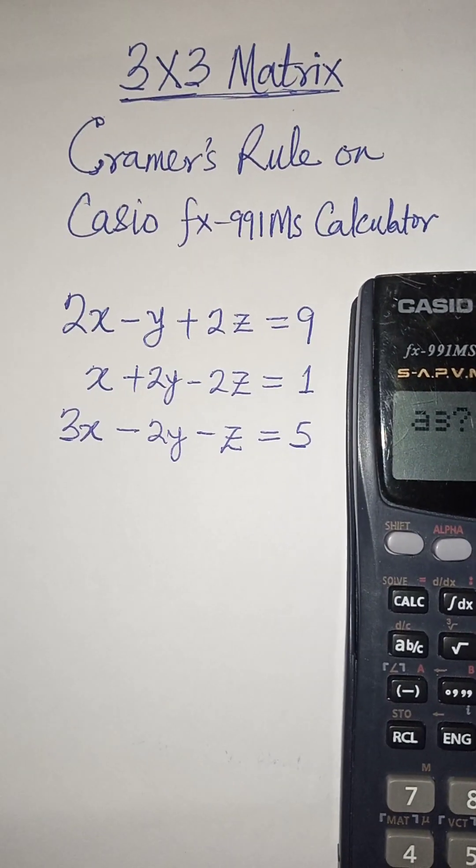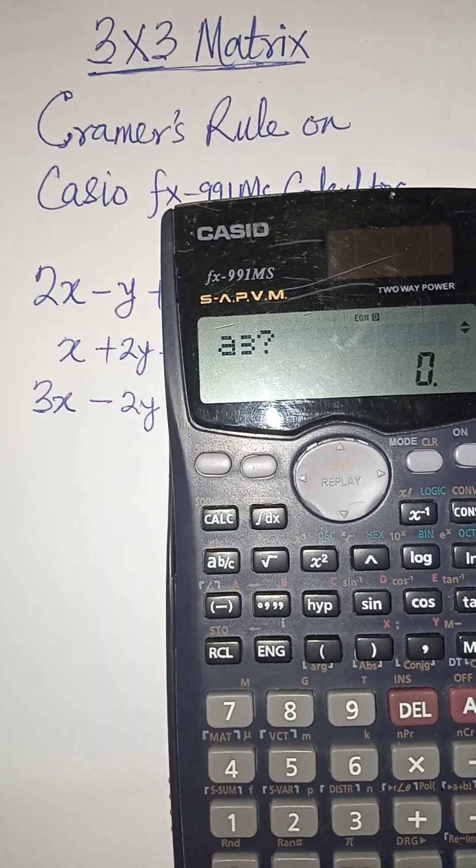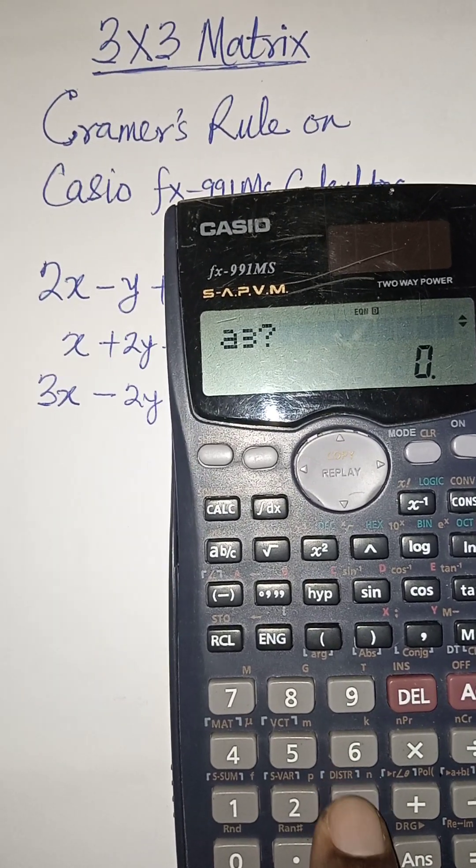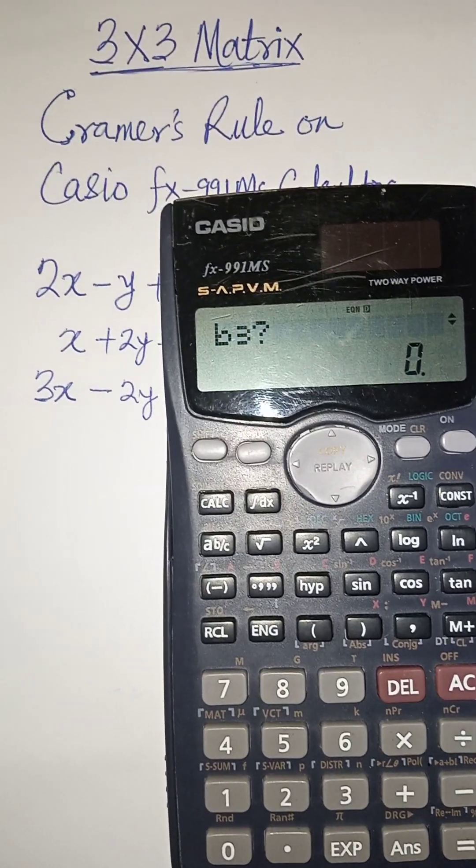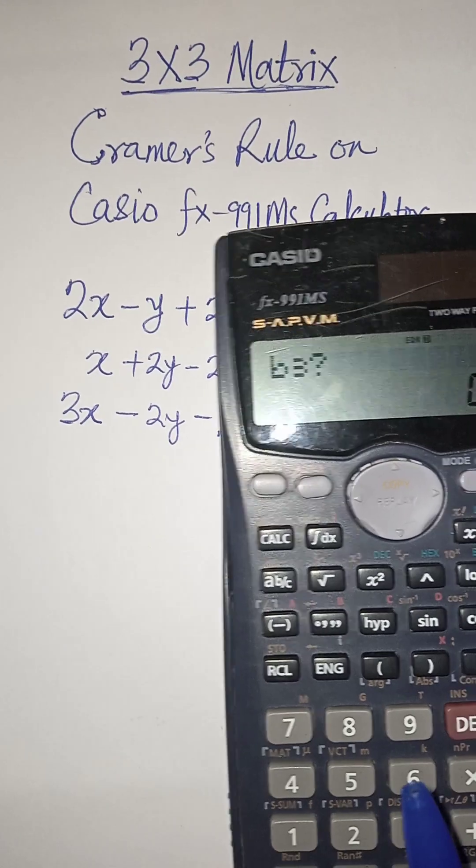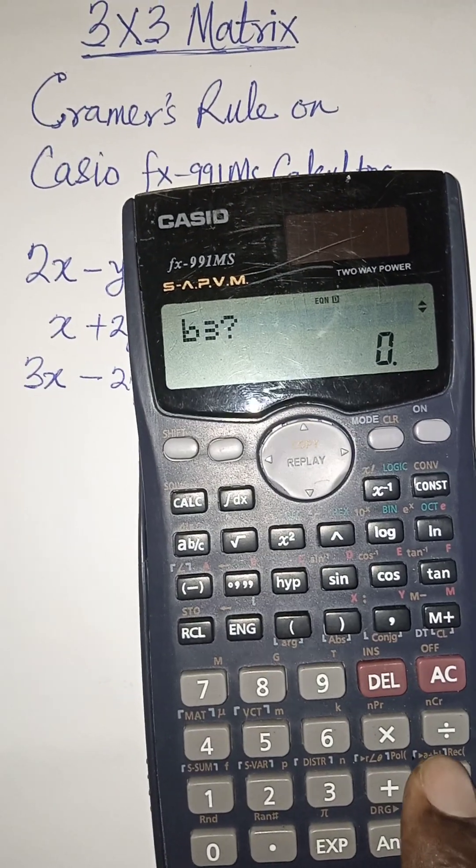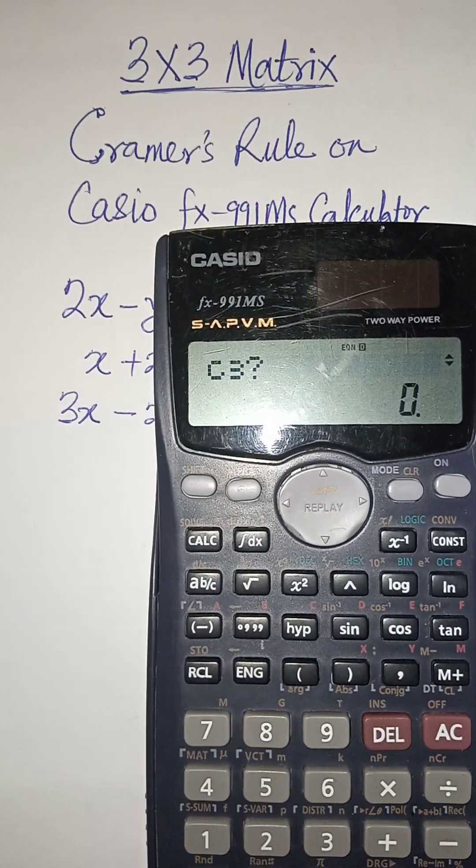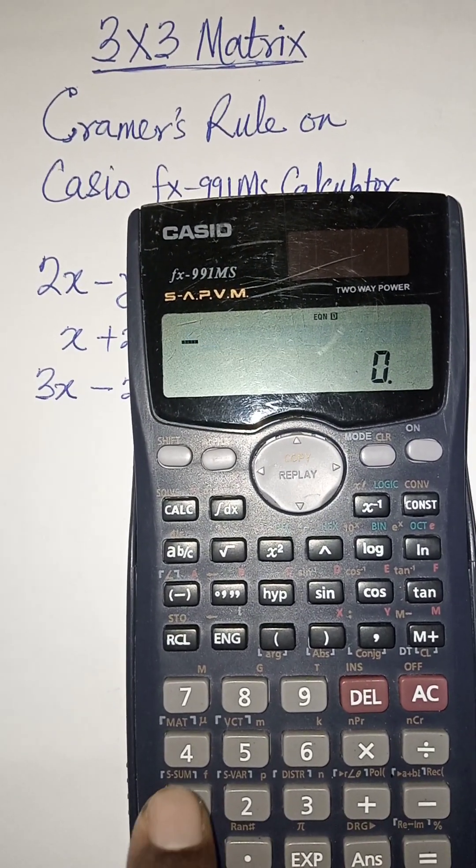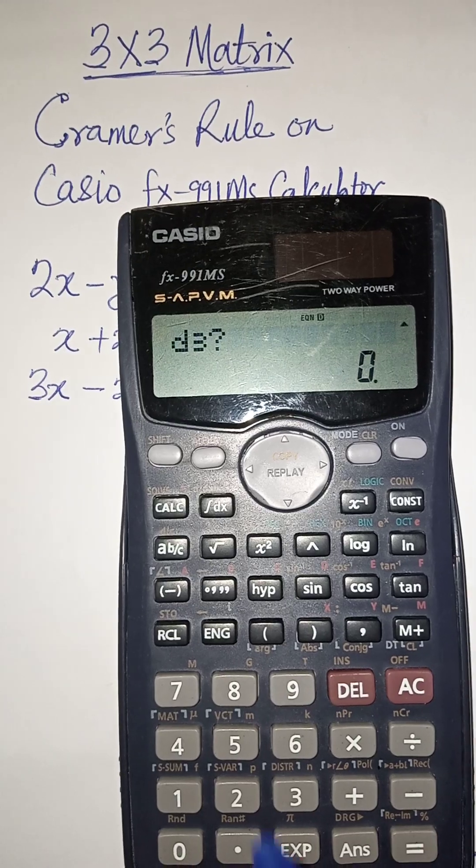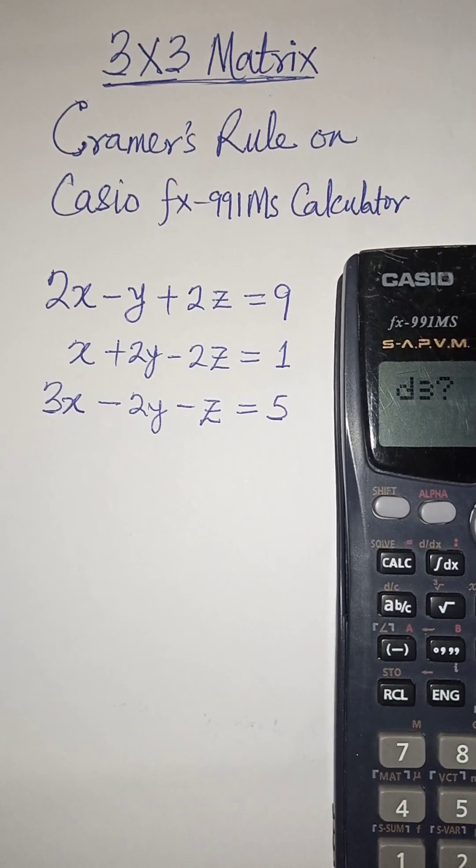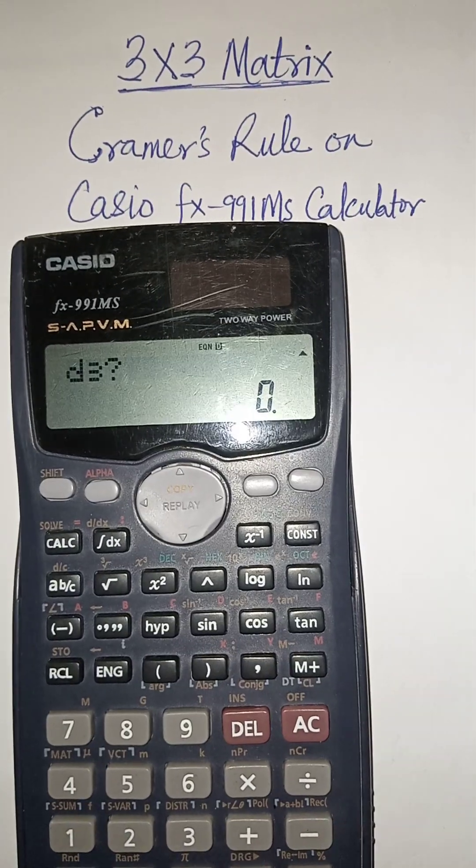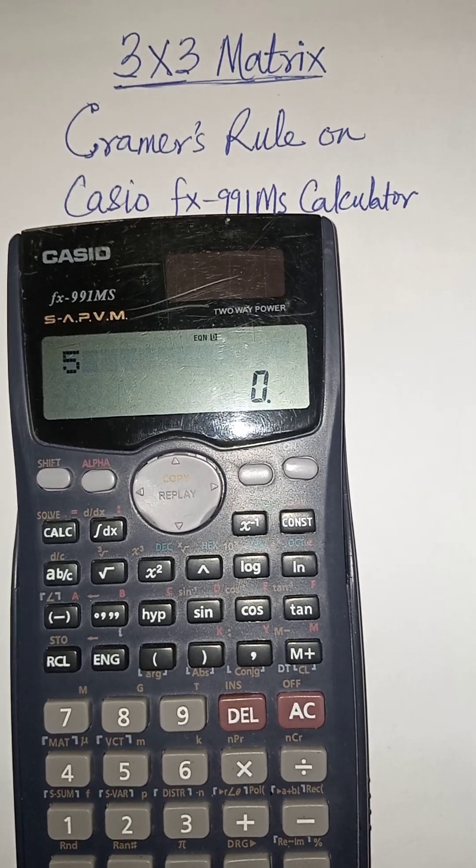The last one is A3. The coefficient of x there is 3, so press 3 equal to. That of y is -2, so minus 2 equal to, and the last one which is the constant is 5. You have 5 equal to.